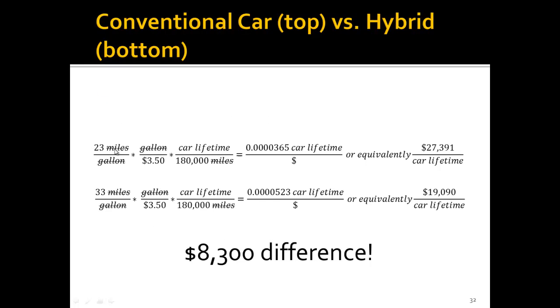So our assumptions, we're just going to assume that a car lasts 180,000 miles and that we spend $3.50 per gallon. So the first car, the 23 miles per gallon car, we multiply by $3.50 per gallon. Gallon is on top because we have to cancel it on the bottom. And then we know one car lifetime equals 180,000 miles, so that gets rid of the miles. And so what we have here is we do the math out. We do 23 divided by 3.50, divided by 180,000. We get this weird unit. We get 0.0000365 car lifetime over dollars. What we really want is dollars per car lifetime. So what we do is we take 1 divided by this top number, and that flips it.